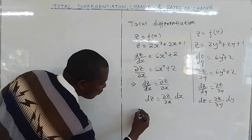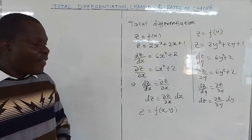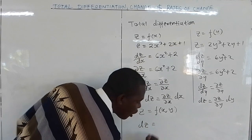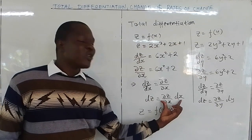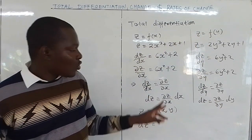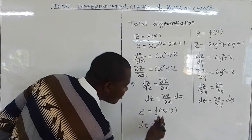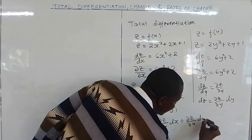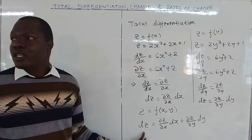What about the case when z is a function of both x and y? When z is a function of both x and y, the total derivative dz — total means sum — combines both cases. When x was the only independent variable you got one part, when y was the only independent variable you got the other. So the total derivative dz = (∂z/∂x)dx + (∂z/∂y)dy. This is how to get the total differentiation.